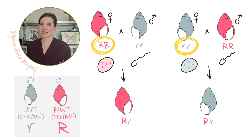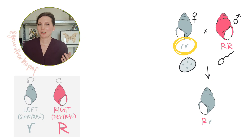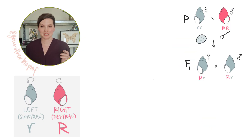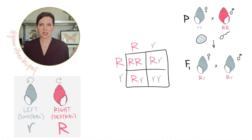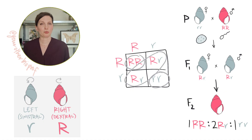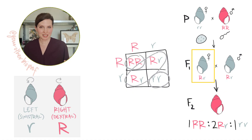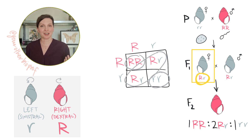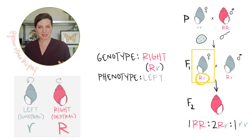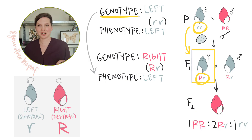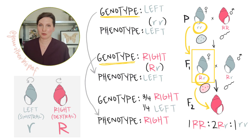Let's look at the F2s. To get the F2s, we're going to cross two of these heterozygous left coiling snails together. We'd expect a 1:2:1 genotype ratio. And the phenotypes? All right coiling. Why? Because it's all about mom's genes. Mom's phenotype was left coiling because her mom's genotype was left coiling. But her own genotype is a right coiling genotype, which means she's going to put right coiling substance into all her eggs, and all of her offspring will be right coiling.